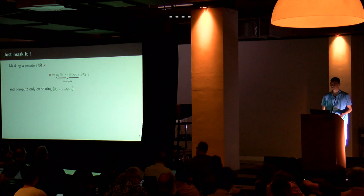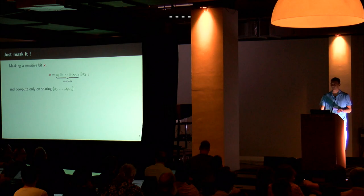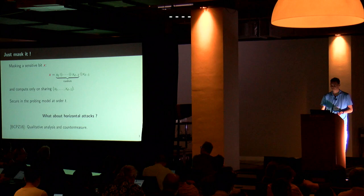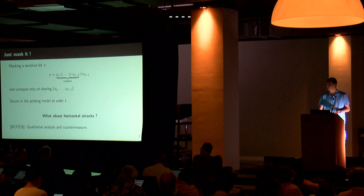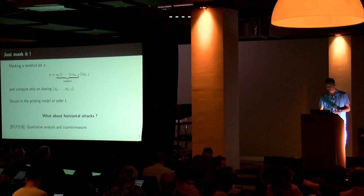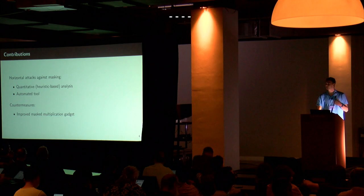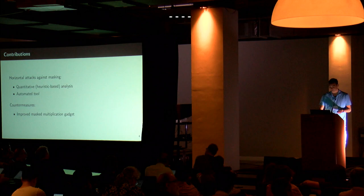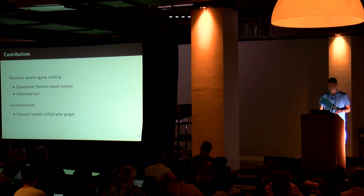The standard way of protecting against horizontal attacks is masking — boolean masking — where you compute on sharings and expect some protection. The question of the impact of horizontal attacks on boolean masking schemes was first tackled by Battistello, Coron and co-authors. We want to improve on that work by making the analysis more quantitative, developing an automated tool to analyze a masked circuit and determine to what extent horizontal attacks can break it, and then design better-protected multiplication gadgets.